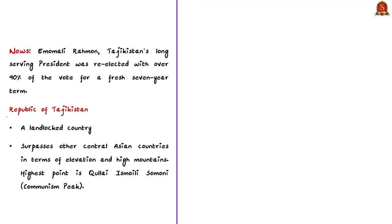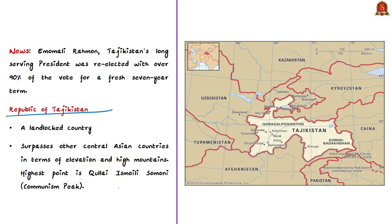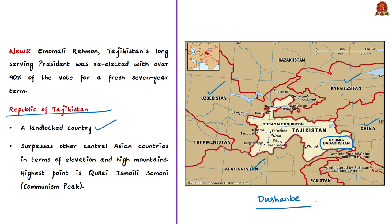Tajikistan is bordered by Kyrgyzstan to the north, China to the east, Afghanistan to the south, and Uzbekistan to the west and northwest. It is a landlocked country. Tajikistan includes a region called Gorno-Badakhshan or Mountain Badakhshan Autonomous Region. Its capital is Dushanbe. Tajikistan has the smallest land area among the five Central Asian states, but in terms of elevation it surpasses all others, enclosing more and higher mountains than any other country in the region.